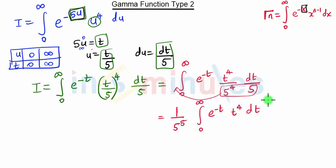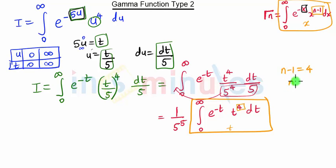If you see these two equations, they are exactly similar. Here the variable is x, here it's t. Here we have n minus 1, here we have 4. So n minus 1 equals 4, which means n equals 5.